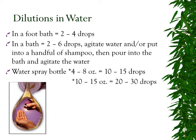For dilutions in water: in a foot bath, two to four drops; in a bathtub, two to six drops — agitate the water or mix a handful into some shampoo before pouring into the bath. I generally put four or five drops in the stream as the bathtub is filling. In a small spray bottle, ten to fifteen drops; in a large ten-to-fifteen-ounce spray bottle, twenty to thirty drops.